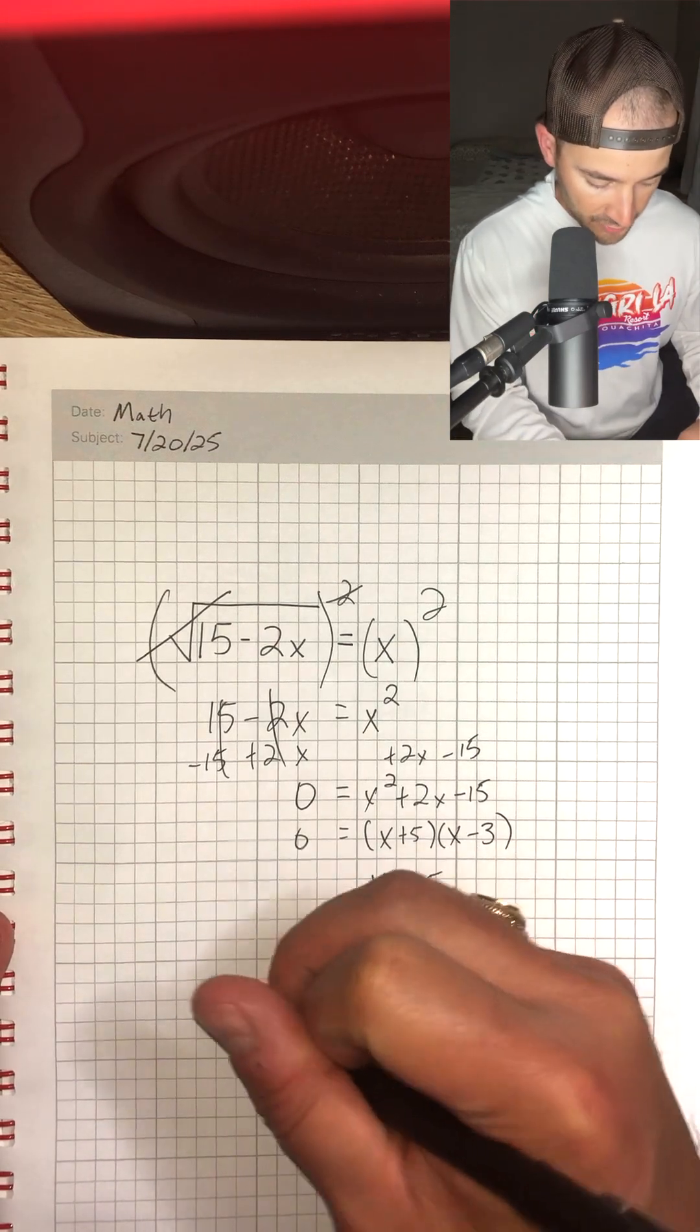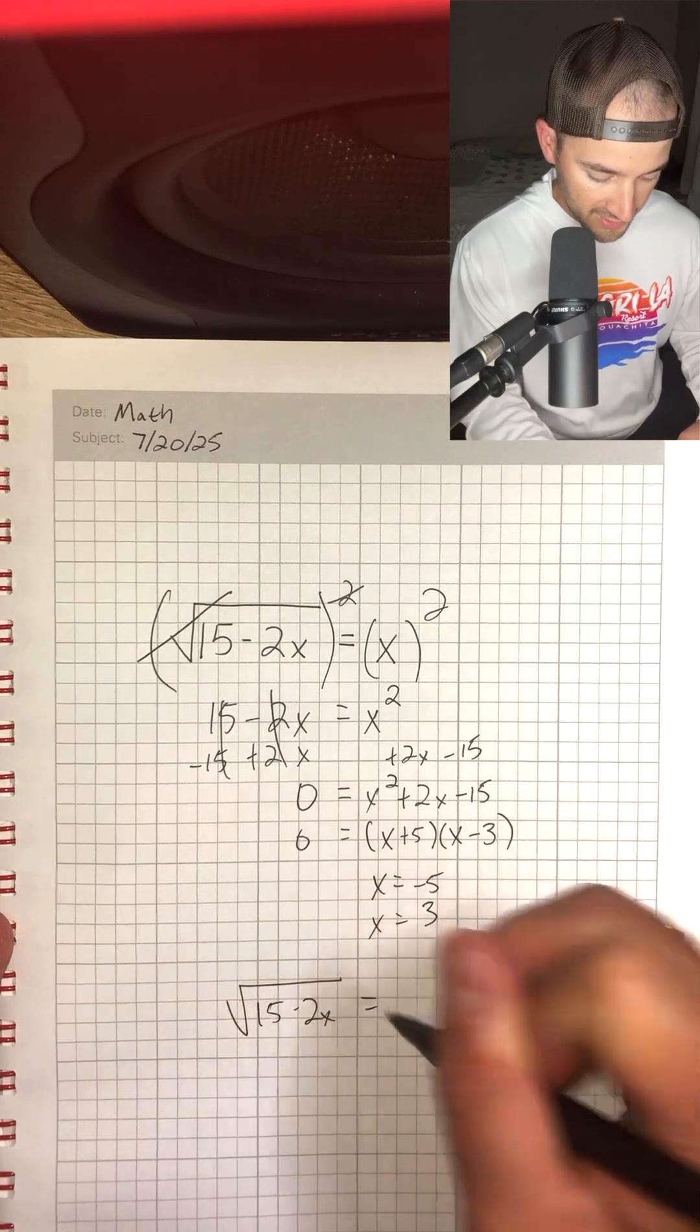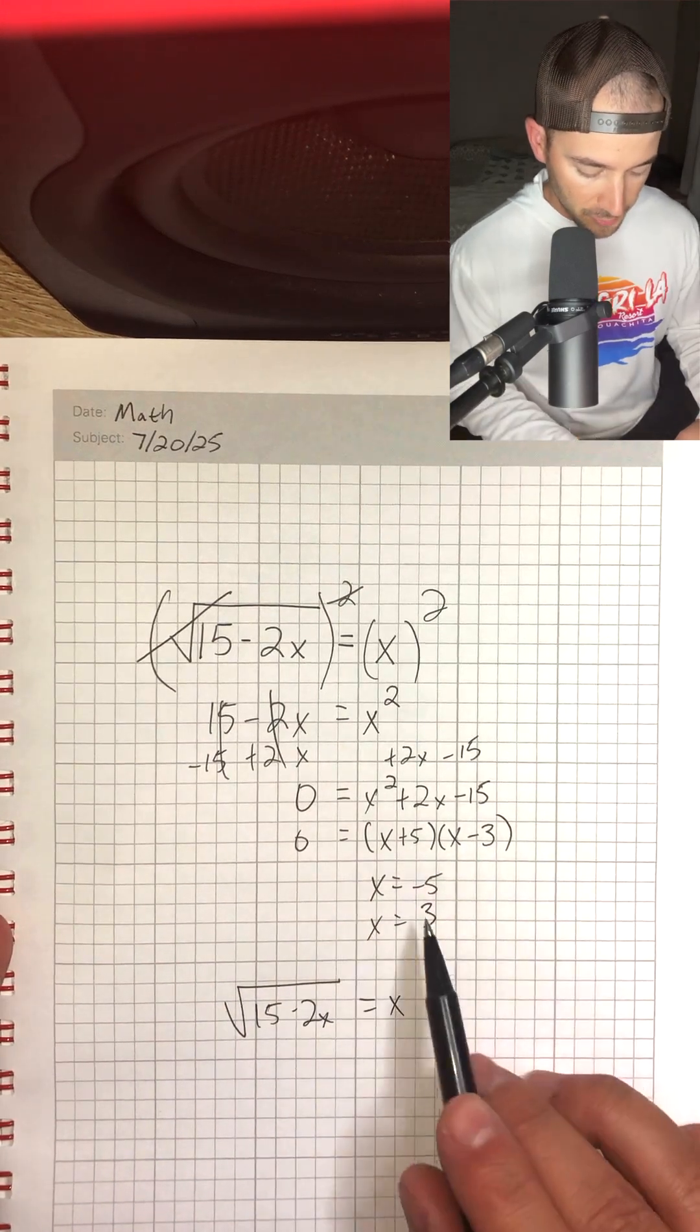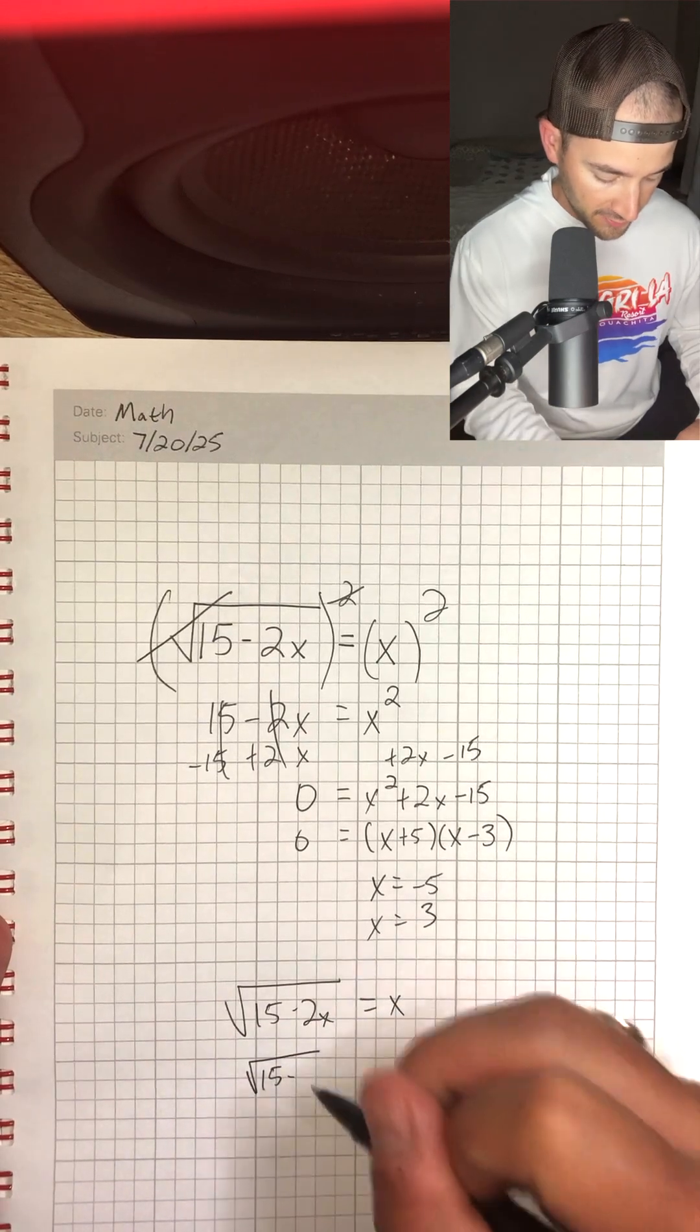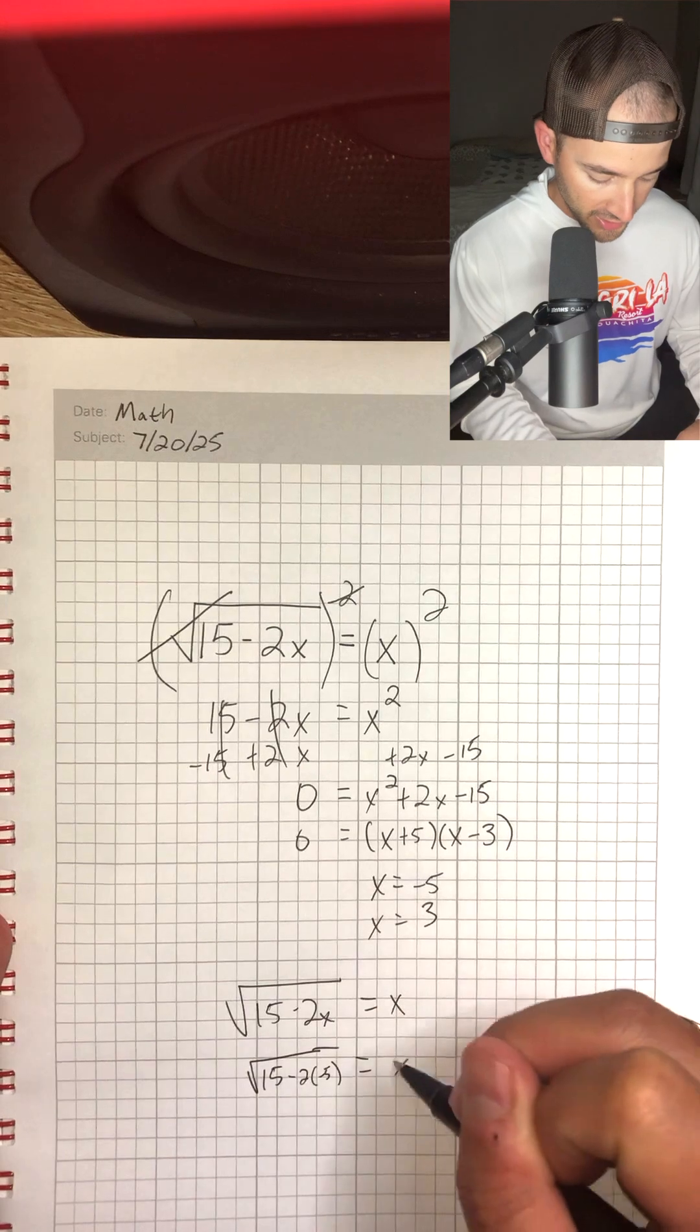So the original equation was square root of 15 minus 2x is equal to x. If we plug in negative 5, we would have square root of 15 minus 2 times negative 5 is equal to x.